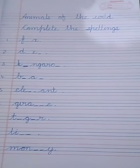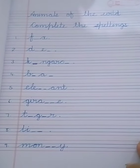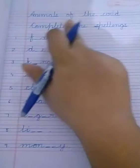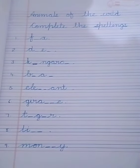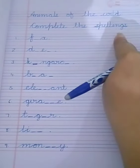We are going to open our EVS classwork copy, and today's topic is 'Animals of the Wild' and complete the spellings.